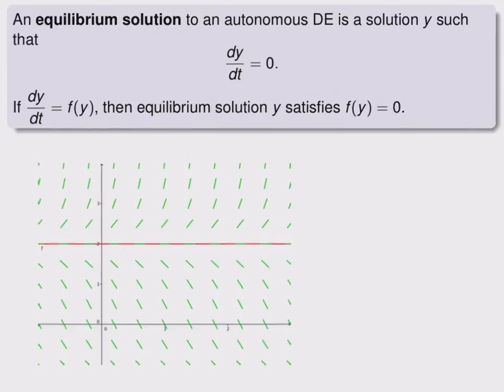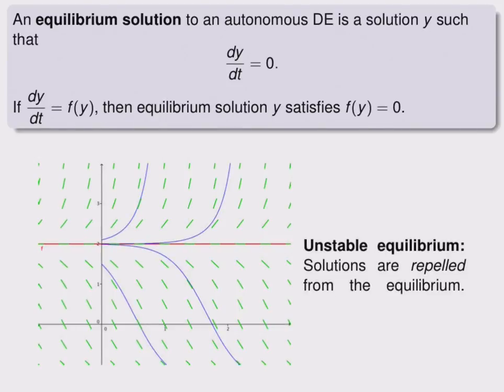But if we plot a number of different solutions, we can see that, as we read left to right, these solutions are repelled away from the equilibrium. We call this an unstable equilibrium, and the solutions are pushed away or repelled from that equilibrium.